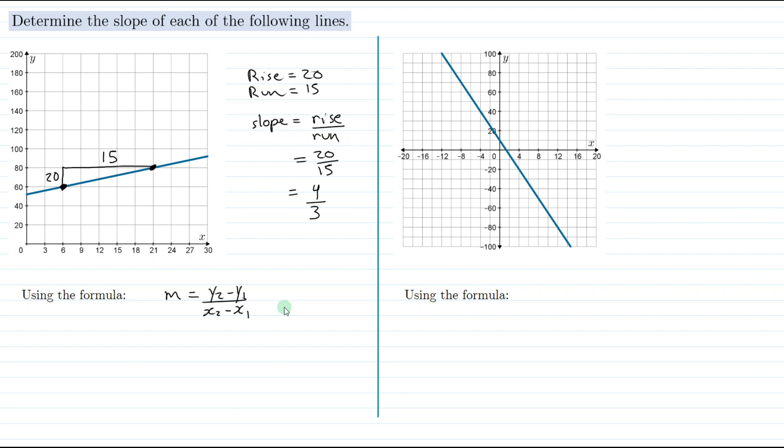So we need two points - one of them we'll call point one and the other we'll call point two. Let's use the points we already marked on our graph. Point one is here with coordinates 6, 60 and point two has coordinates 21, 80. It doesn't matter which point you call point one and which you call point two, you'll get the same answer either way. But I like to call the point on the left point one and the other point point two.